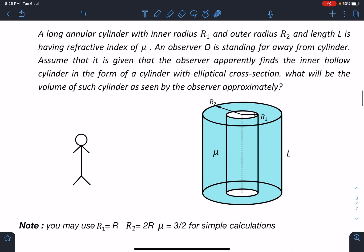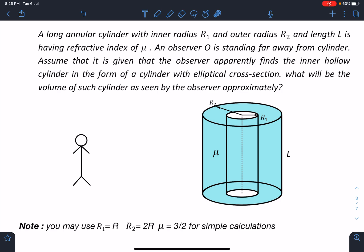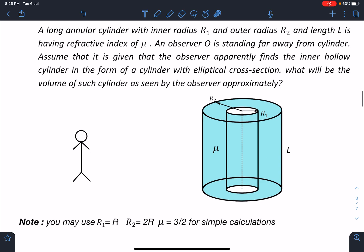Here is the problem statement: A long annular cylinder with inner radius r1 and outer radius r2 and length l is having refractive index of mu. An observer always standing far away from the cylinder. Assume that it is given that the observer apparently finds the inner hollow cylinder in the form of a cylinder with elliptical cross section. What will be the volume of such cylinder as seen by the observer approximately? So r1, r2, length l, and mu is given. While solving, I realized that the calculations are terrible in this problem, so you can use r1 equal to r, r2 equal to 2r, and mu equal to 3 by 2, and by that we get a very nice answer.